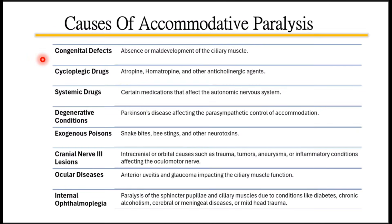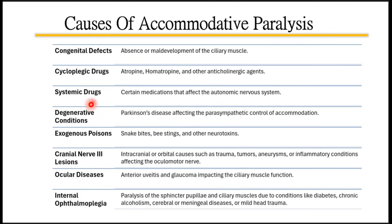Common causes of accommodative paralysis include congenital defects such as absence or maldevelopment of the ciliary muscle, cycloplegic drugs, systemic drugs, degenerative conditions like Parkinson's disease affecting parasympathetic control, poisons, cranial nerve three lesions, and ocular diseases like anterior uveitis and glaucoma, which can also impact ciliary muscle function. Internal ophthalmoplegia can also affect accommodation.